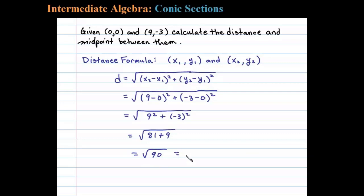We can simplify √90 a little further. If we think of 90 as 9 times 10, that's √9 × √10, which equals 3√10. Distance is measured in linear units, so we write 3√10 units.